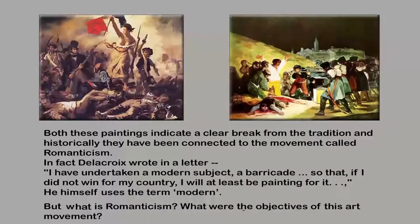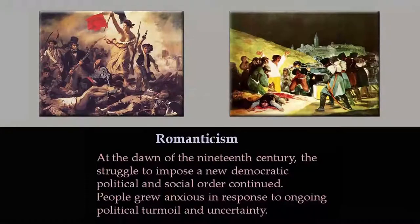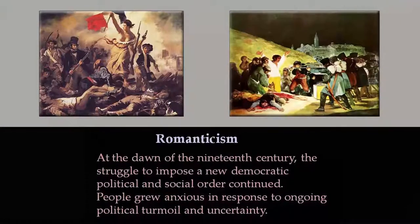But then what is Romanticism, and what were the objectives of this art movement that took place in the late 18th to early 19th century? Generally speaking, Romanticism unfolded itself at the dawn of the 19th century when the struggle to establish a new democratic, political and social order was in process. So clearly there was a political context, a social context.